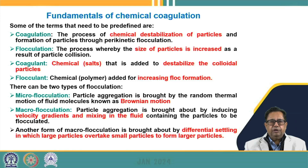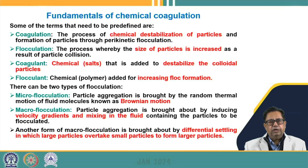There are different types of flocculation. Micro-flocculation means particle aggregation takes place due to thermal motion of fluid molecules — Brownian motion — causing destabilized particles to come closer and form flocs. Macro-flocculation means providing mixing or a velocity gradient in the fluid so particles come in contact and are flocculated and settle out from the mixture.